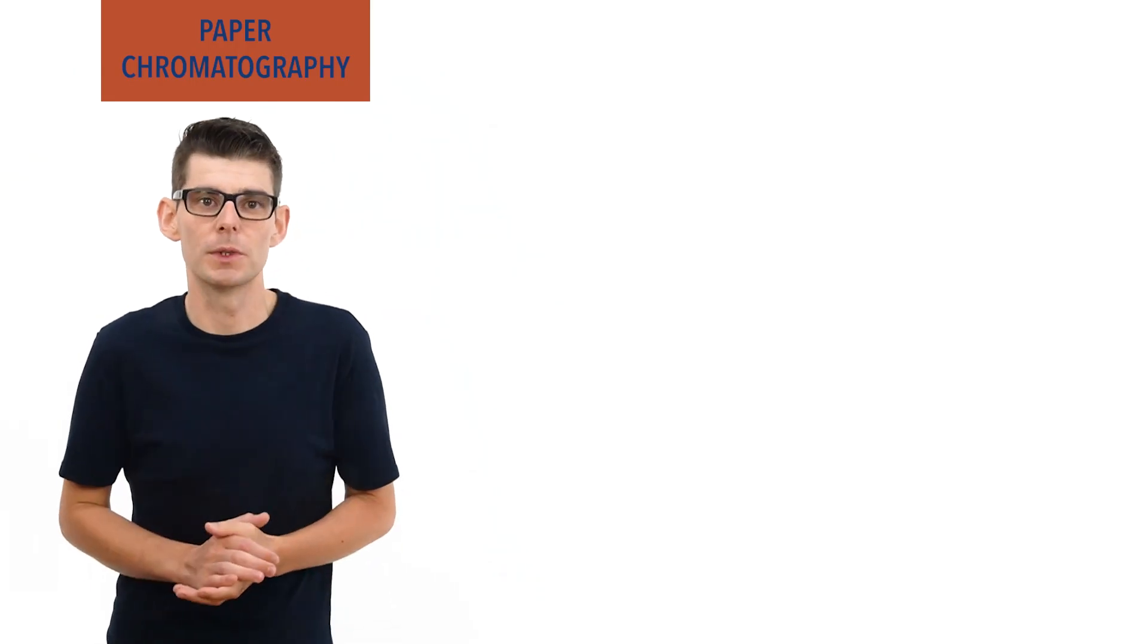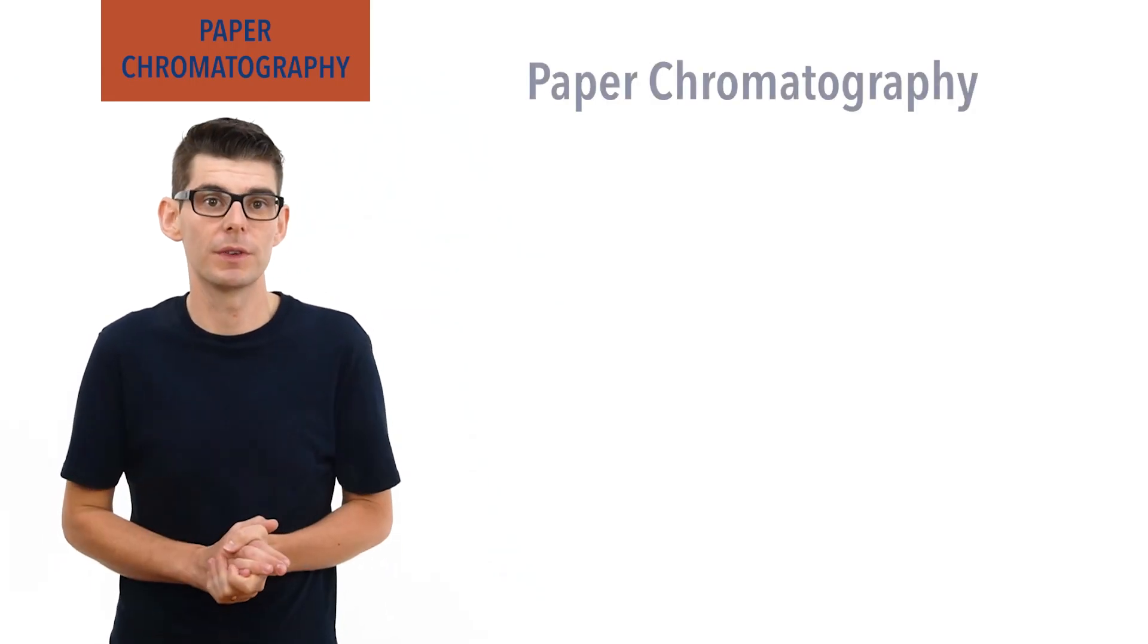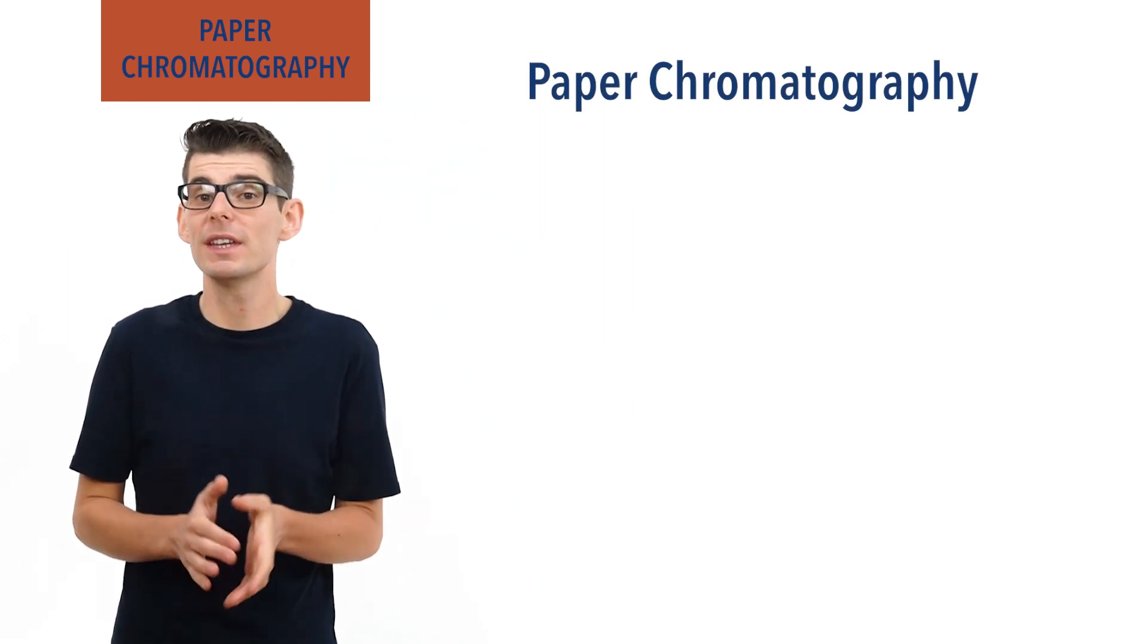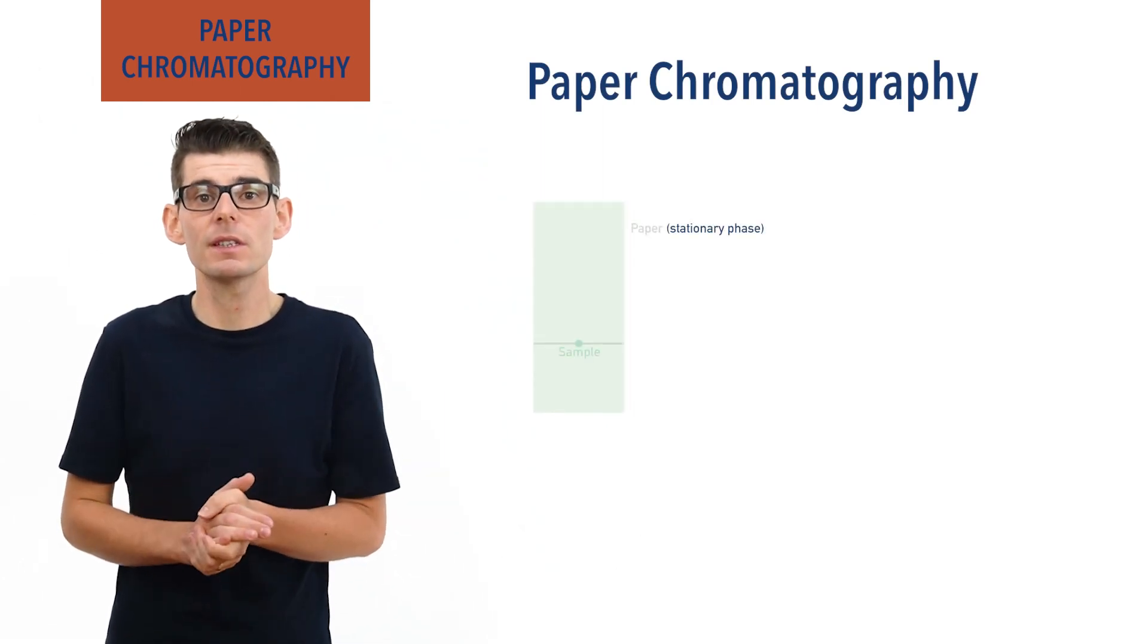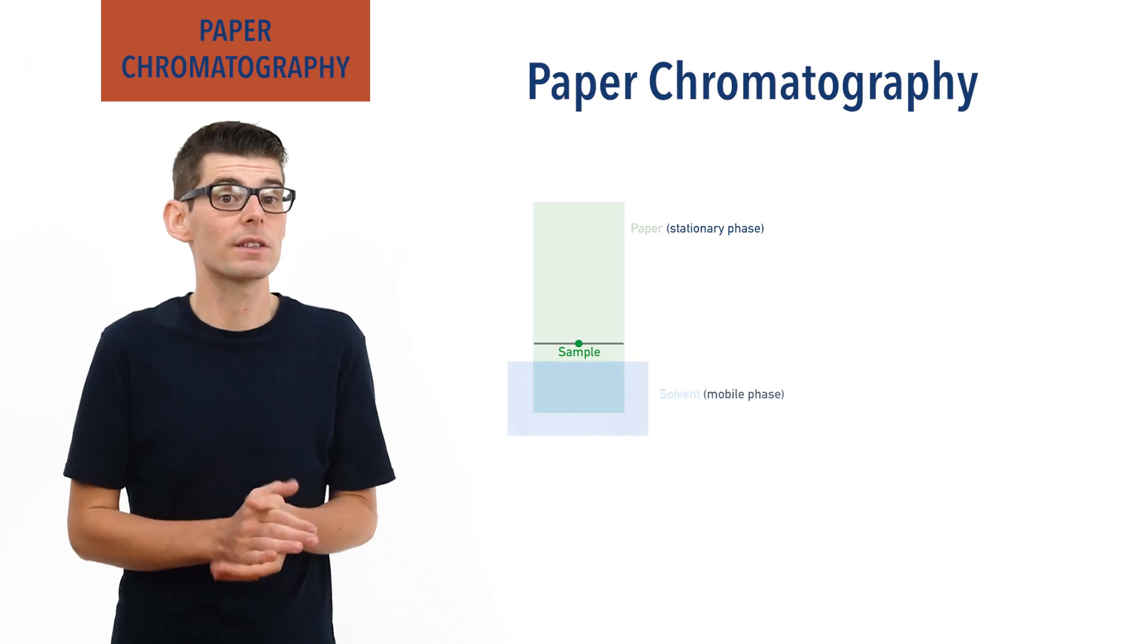The most common example of chromatography is paper chromatography, where the stationary phase is paper and a substance is dissolved in a solvent, which acts as the mobile phase.